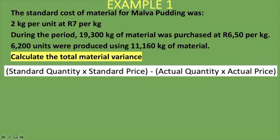When we talk about quantity here, we are talking about kilograms — not units. That's where students usually make mistakes: they use the units instead of the kgs. The standard price is 7 rand per kg. The actual quantity is not the 6,200 units, but the 11,160 kg. The actual price is 6 rand 50, because we are told that during the period we purchased at 6 rand 50 per kg.